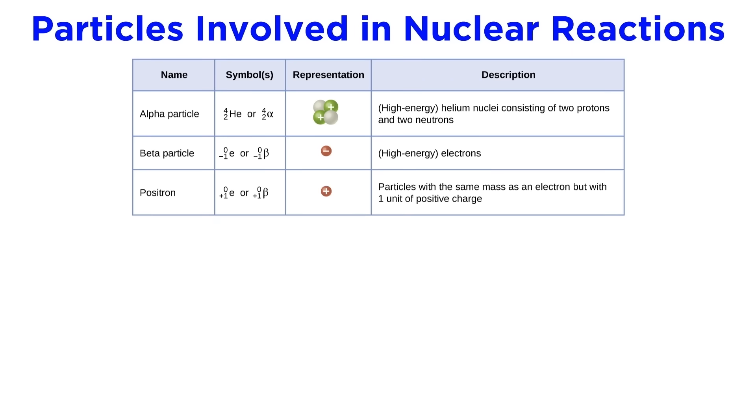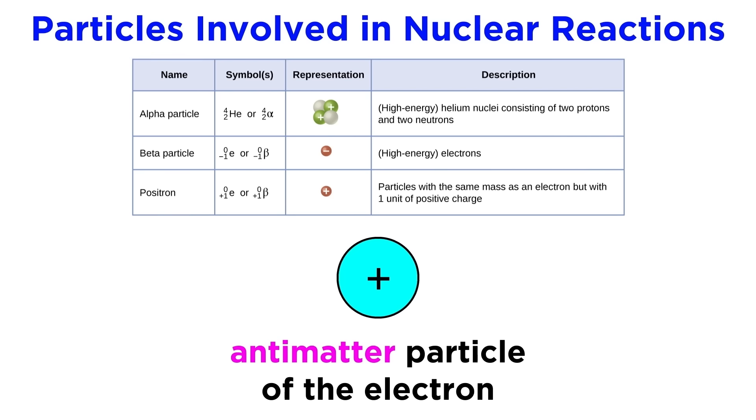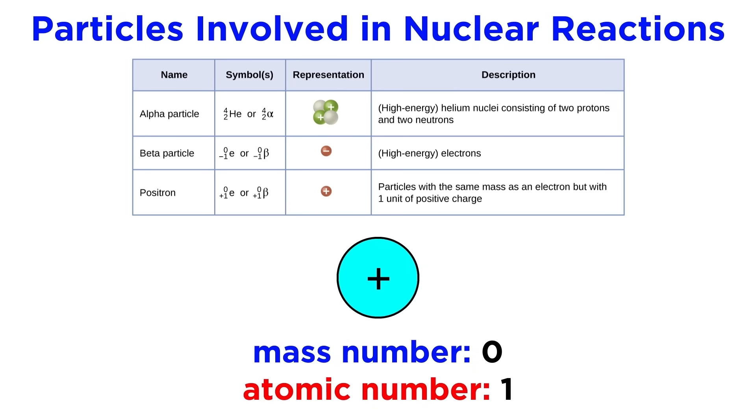Next is the positron. This particle is an example of antimatter, which is a concept that is so strange and tangential to our purposes here that it's best to completely avoid rigorously describing antimatter. We just need to know that the positron is the antimatter version of the electron, so it has the same mass as the electron, but is opposite in charge. For this reason, we assign it either an E or an uppercase beta, just like the electron, but we will assign it a positive one for the atomic number, as it is positively charged.